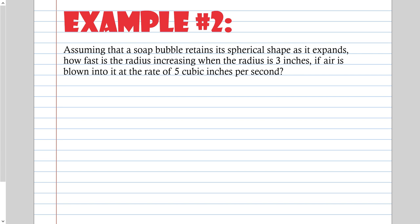Assuming that a silt bubble retains a spherical shape as it expands, how fast is the radius increasing when the radius is 3 inches, if air is blown into it at the rate of 5 cubic inches per second? The keyword here is 'cubic' — what is the only thing that's ever cubic? Volume. So that is the rate of volume. That's usually tricky because it doesn't flat-out tell you volume.